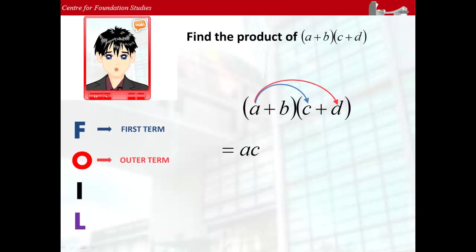Next, looking at the letter O, we multiply the outer term of each bracket, which in this case is a and d, gives positive ad.